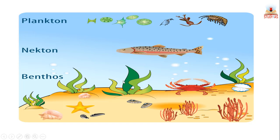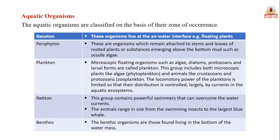Benthos are organisms found living at the bottom of the water mass. Practically every aquatic ecosystem contains a well-developed benthos community. Periphyton are those organisms which remain attached to the stems and leaves of rooted plants.